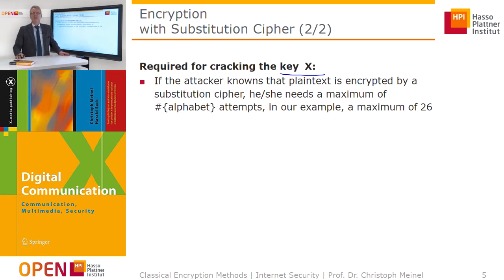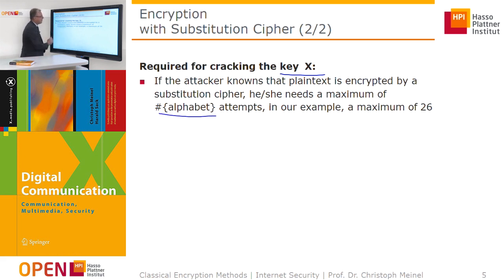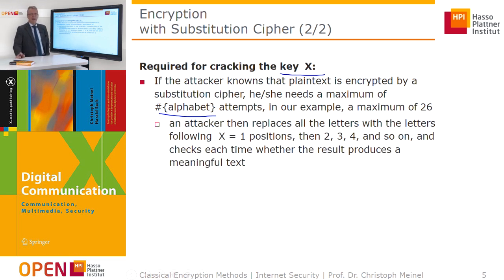If an attacker knows the plain text is encrypted by a substitution cipher, they need to find X. With a brute force attack, the maximum number of tries is the number of alphabet positions minus 1. That means they try shift 1, then shift 2, shift 3, shift 4, up to 26.